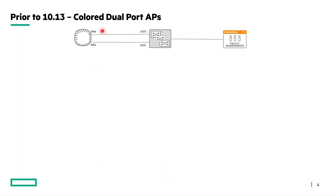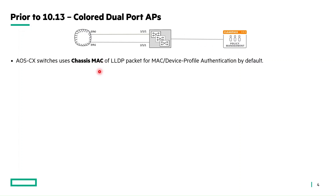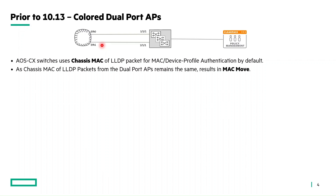Let's understand the behavior of dual port APs prior to the 10.13 release. These dual port APs could be deployed only using colored port configuration instead of colorless port. Consider a dual port AP deployment where port E0 is connected to one VSF member and port E1 is connected to a different VSF member for path and PoE redundancy. These APs can be onboarded using device profile authentication or MAC authentication from an external RADIUS server. By default, AOS-CX switches use only the chassis MAC from the LLDP packet for MAC or device profile authentication. But in case of LLDP packets from the dual port AP, the chassis MAC remains the same across both ports, resulting in a MAC move.